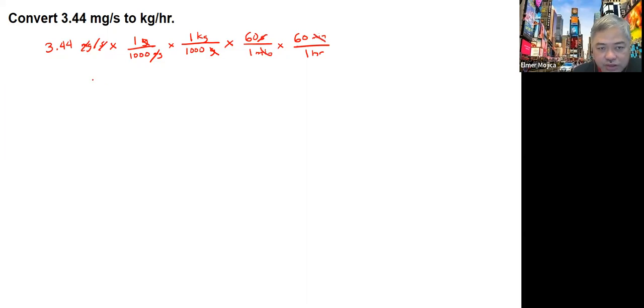We can cancel the units that can be cancelled until the one that is left is the unit we're looking for, which is kilograms per hour. When you do the calculation, you'll get around 0.0124, or you could put it as 1.24 times 10 to the negative 2 kilograms per hour.